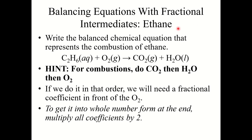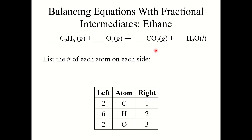Let's look at something like ethane. You may have noticed in the previous examples we did, it always worked out nicely with whole numbers. When we balance equations, we want the equations with the lowest whole number coefficients. But you may run into problems, especially with combustion reactions, where it doesn't work out quite so cleanly with lowest whole number coefficients. So let's look at an example of this.